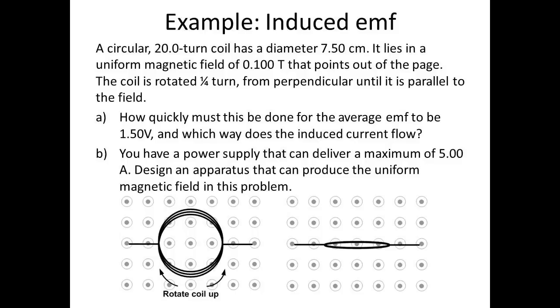Here's an example with induced EMF. A circular 20-turn coil has a diameter of 7.5 centimeters. It lies in a uniform magnetic field of 0.1 tesla that points out of the page. The coil is rotated one quarter turn from perpendicular until it is parallel to the field. How quickly must this be done for the average EMF to be 1.5 volts, and which way does the induced current flow? You have a power supply that can deliver a maximum of 5 amperes. Design an apparatus that can produce the uniform magnetic field in this problem.